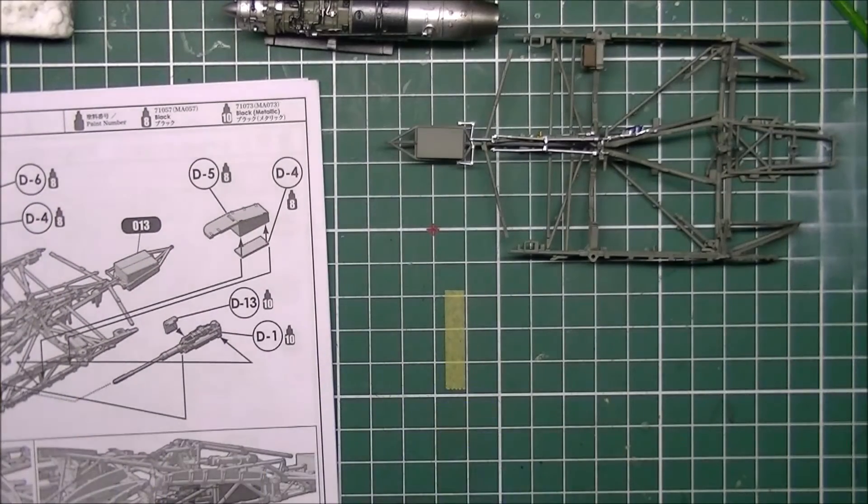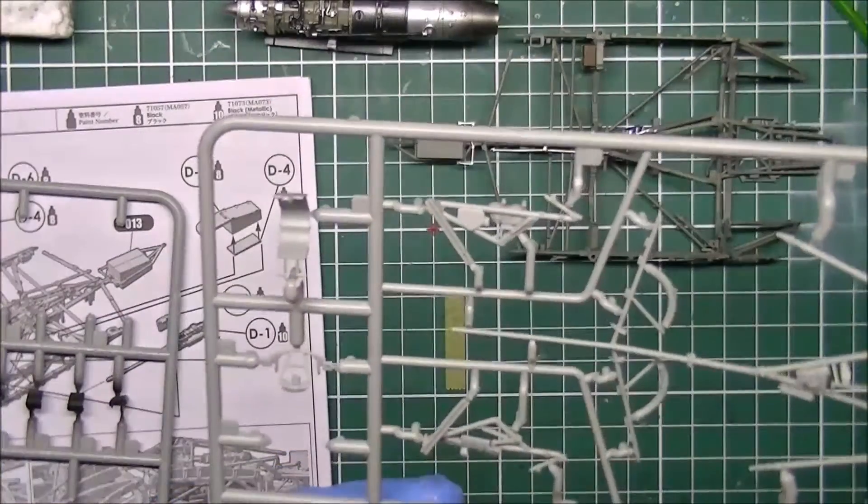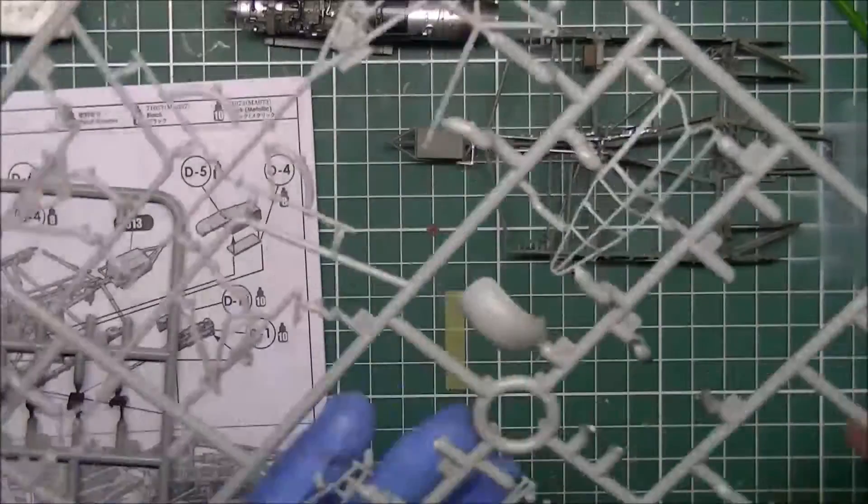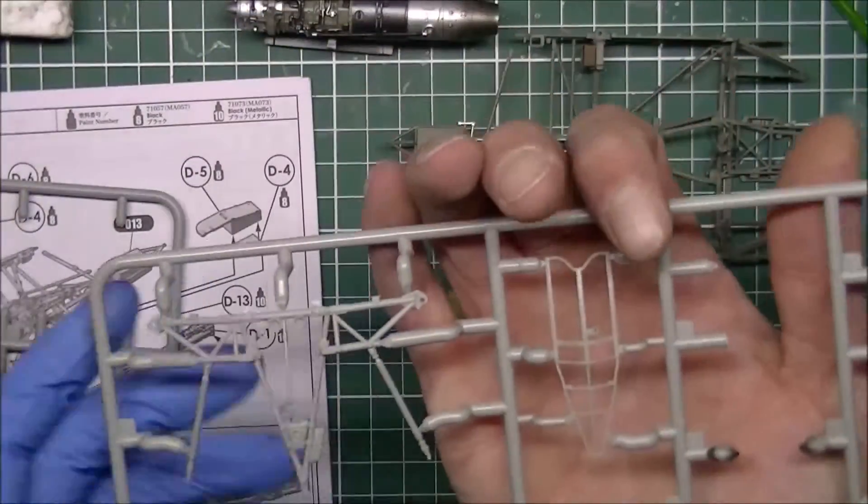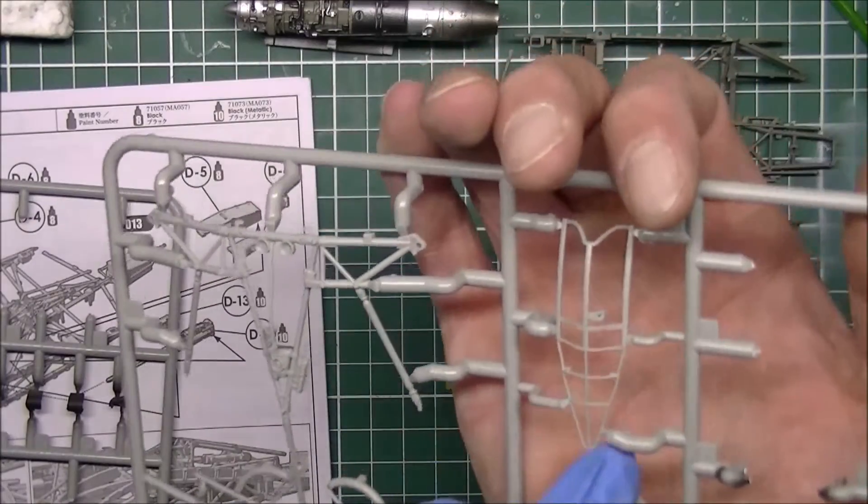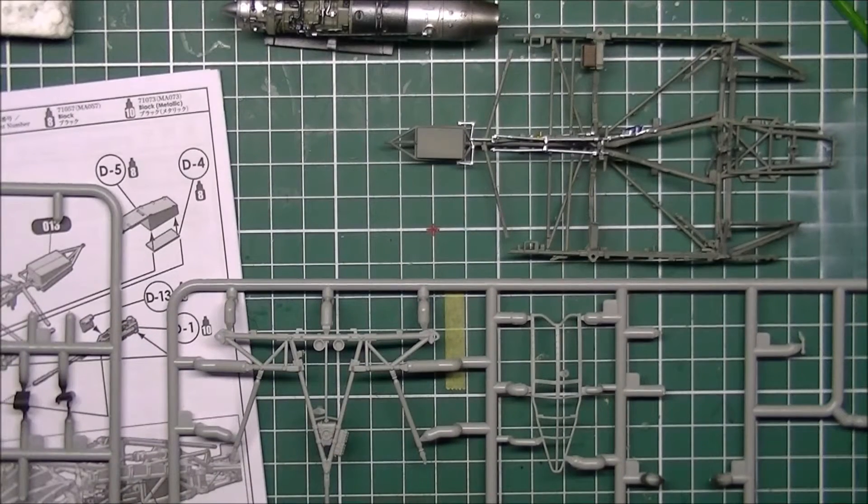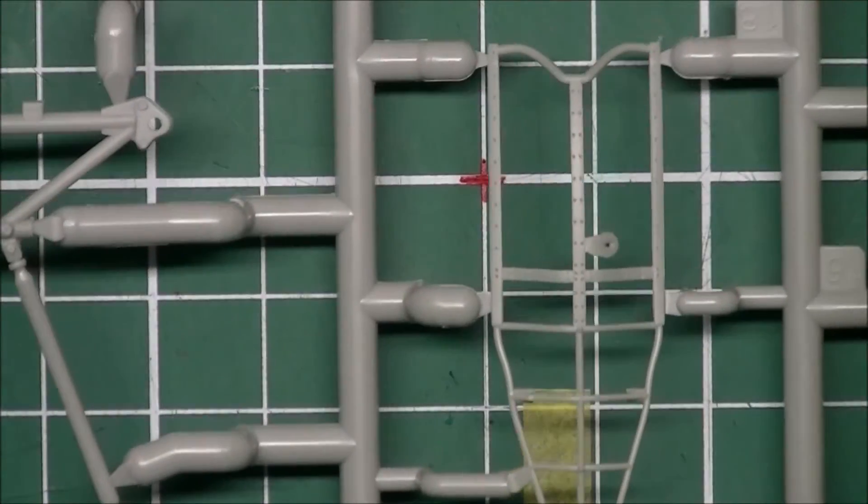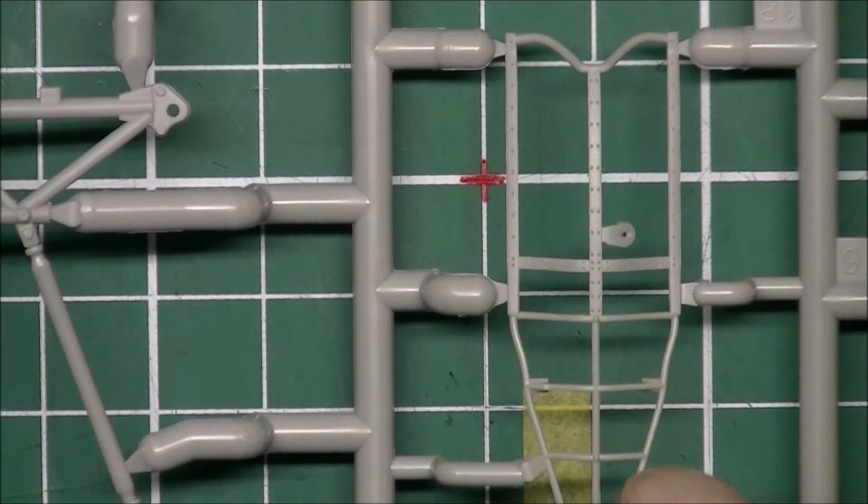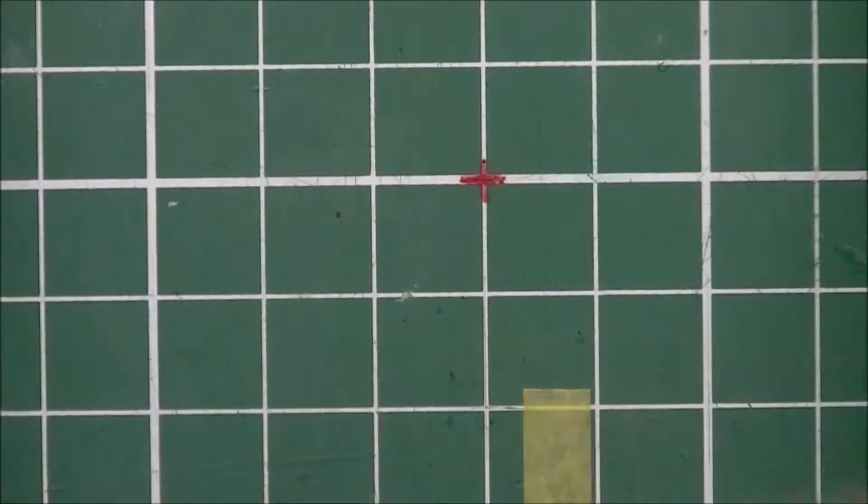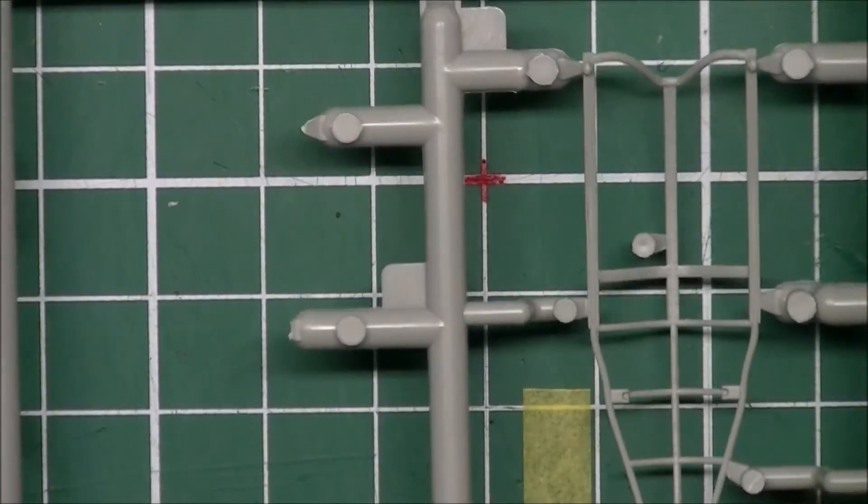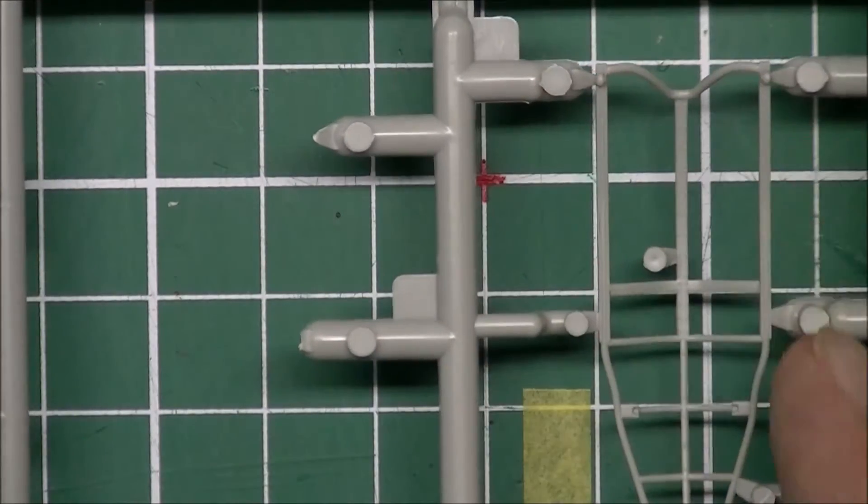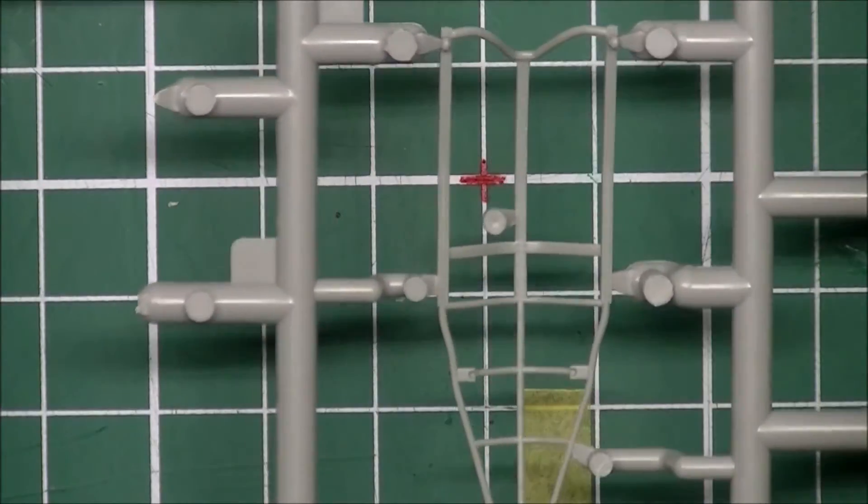There's one thing - this part, it's very fragile. The plastic is really thin, very fragile, and the gates on the sprue there are very very thick. So they could have done that a bit better.